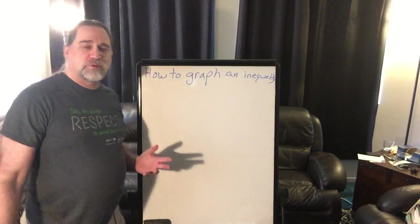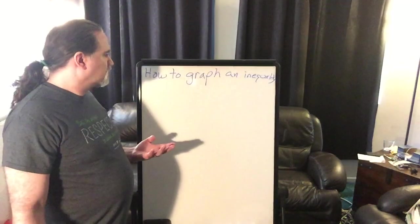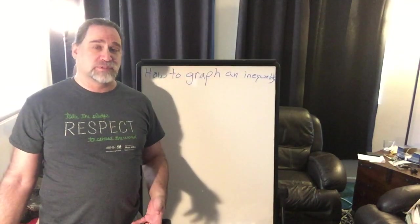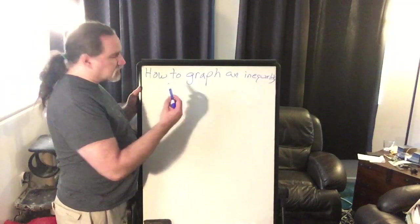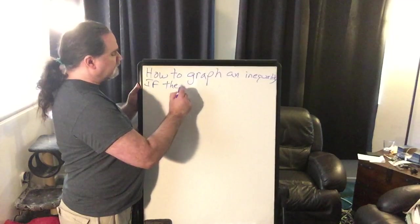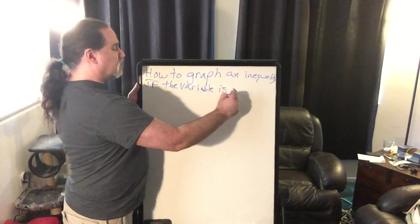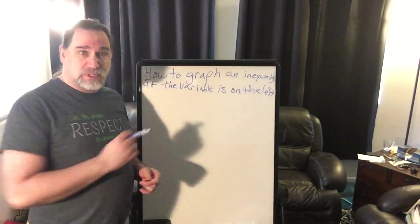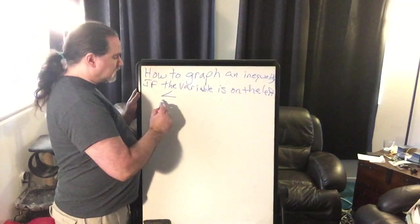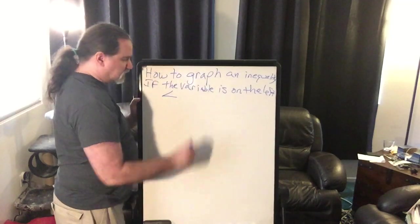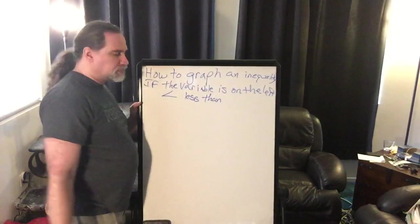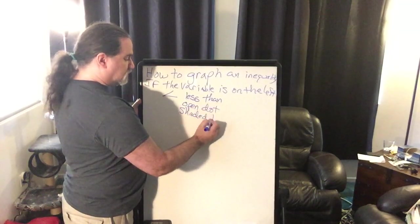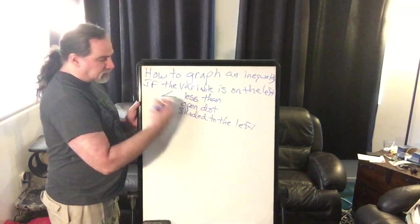There are really four possibilities corresponding to the four types of inequalities: less than, greater than, less than or equal to, and greater than or equal to. If the variable is on the left — and that's one of the reasons I keep saying to get the variable on the left — then for less than, we use an open dot and shade to the left. You can almost see it like an arrow pointing left.